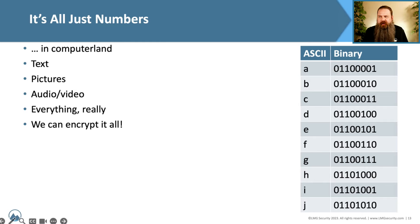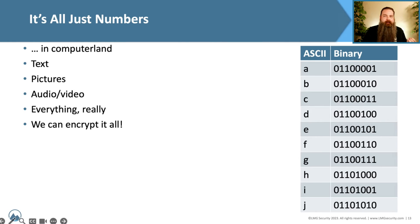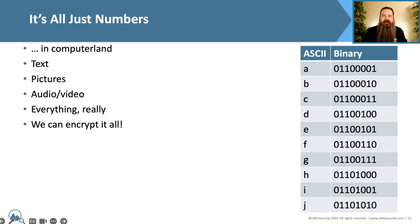This is why when we see things like RSA encryption, we consider it to be, once we get above a certain level, basically unbreakable. It would be computationally impossible — or improbable — for a computer to figure out what that encryption sequence actually was.